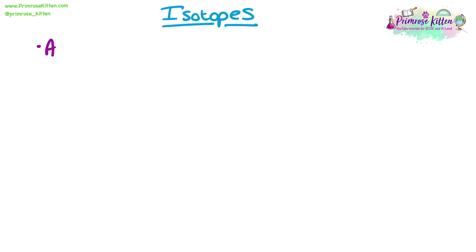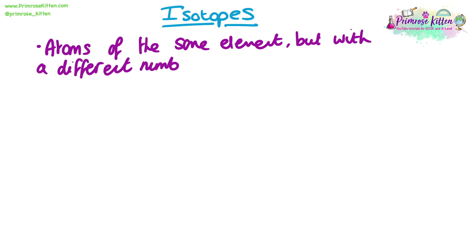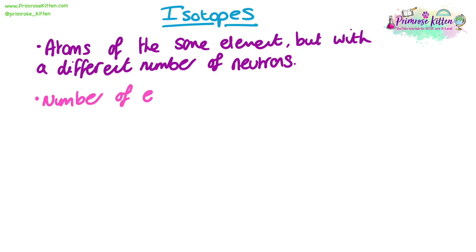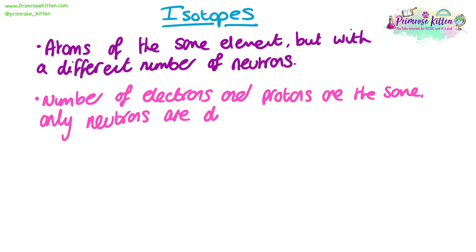We're next going to look at isotopes. Isotopes are atoms of the same element that have a different number of neutrons. Everything else stays the same: the chemical symbol, the number of electrons, and the number of protons — but the number of neutrons in the nucleus is different. The number of protons and electrons stays the same in isotopes, which means that the chemical properties of these isotopes are the same, because it's the number of electrons on the outer shell that determines chemical properties.